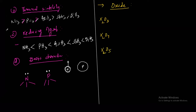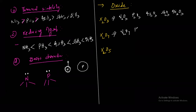For X₂O₃, the oxides formed are N₂O₃, P₂O₃, and Bi₂O₃. For X₂O₄, the oxides are N₂O₄, P₂O₄, As₂O₄, Sb₂O₄, and Bi₂O₄.